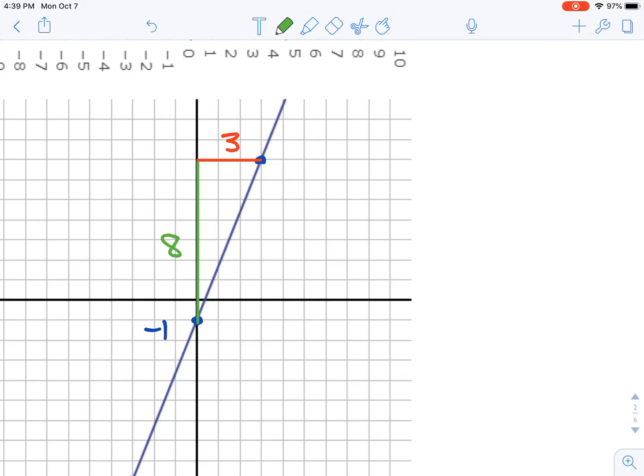It's a positive 8 because this person would be climbing up the line from left to right. So it is a positive slope.